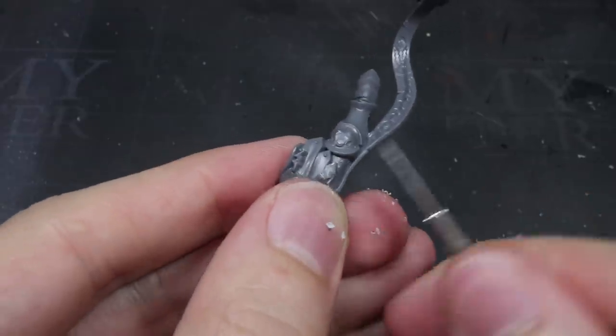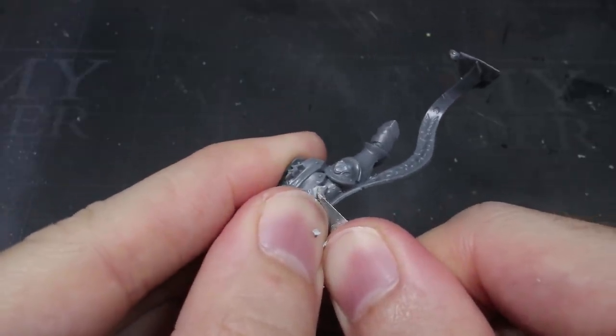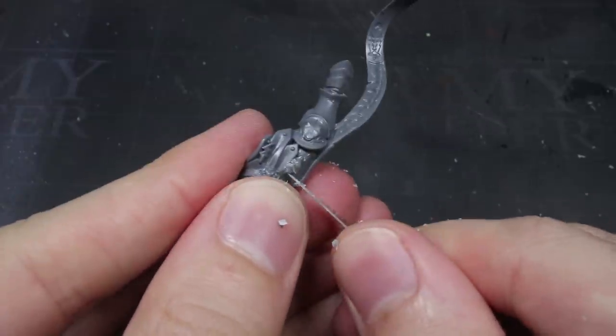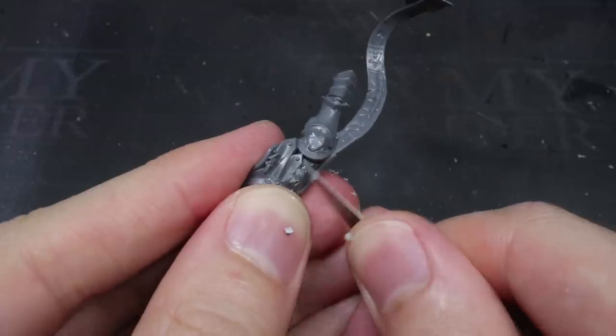This process was then repeated with the bolts hanging from the tassets. These were a little trickier as I didn't want to damage the tassets as I did so. So take your time and make small changes.